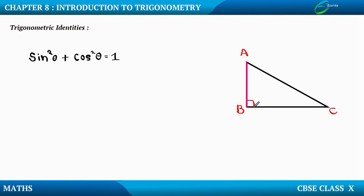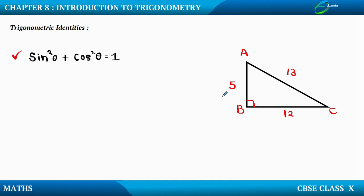So we can apply trigonometry here. Let me consider the three sides: AB equal to 5 units, BC equal to 12 units, and the hypotenuse AC equal to 13 units. So AB is 5, BC is 12, and AC is 13. Now if we apply the identity sin squared theta plus cos squared theta equal to 1, let us try to prove whether it is true or not.